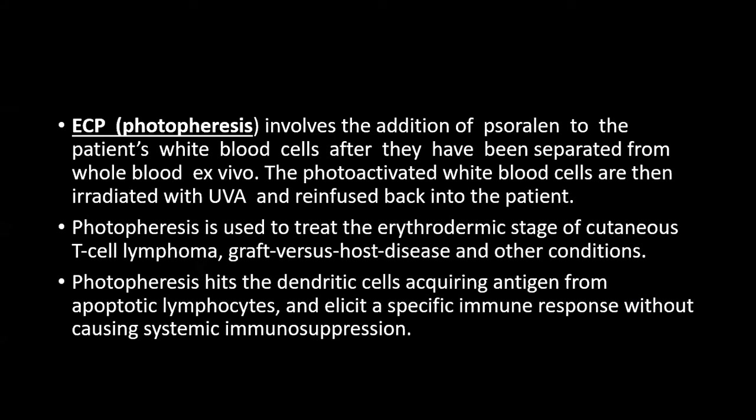The fourth type of phototherapy is ECP or extracorporeal photophoresis. This therapy involves addition of psoralen to a patient's white cells after they have been separated from whole blood in vitro. These photoactivated white cells are then irradiated with UVA and re-infused back into the patient. Photophoresis is used to treat the erythrodermic stage of cutaneous T-cell lymphoma, chronic graft-versus-host disease, and some other conditions. It acts by dendritic cells acquiring antigen from apoptotic lymphocytes and eliciting a specific immune response without causing systemic immunosuppression.